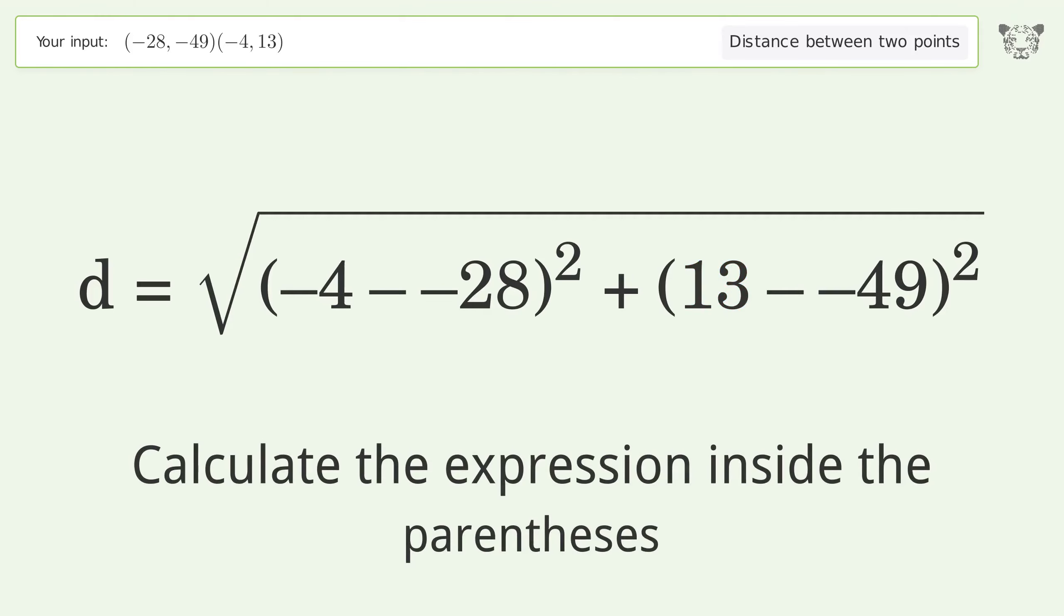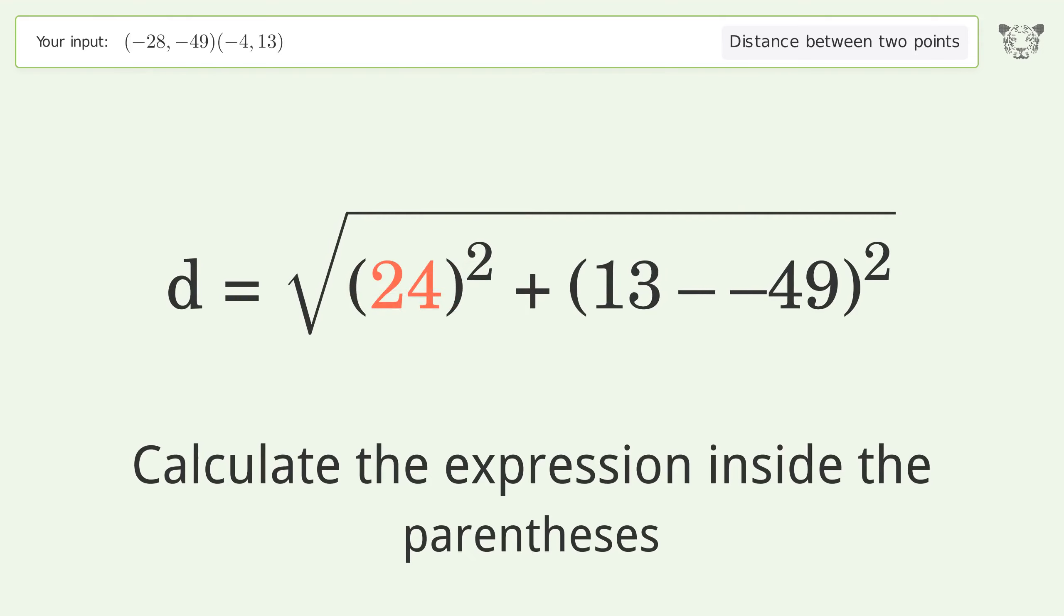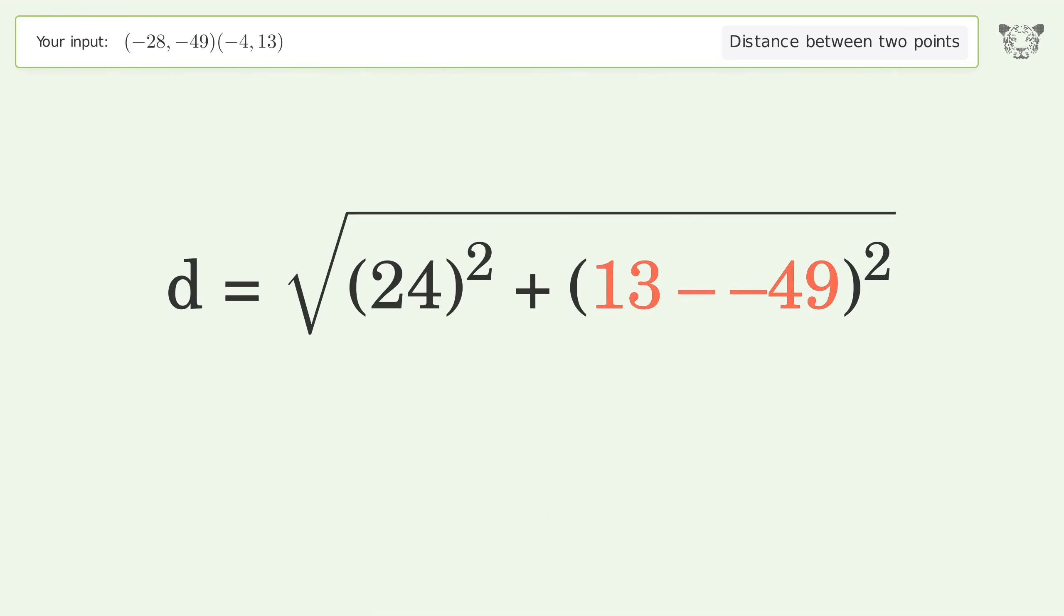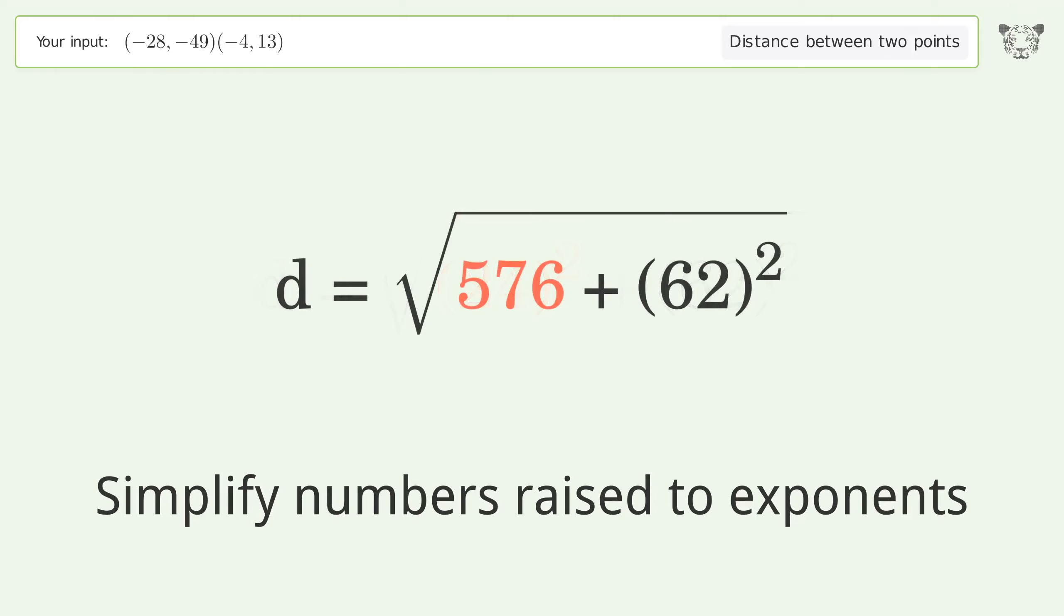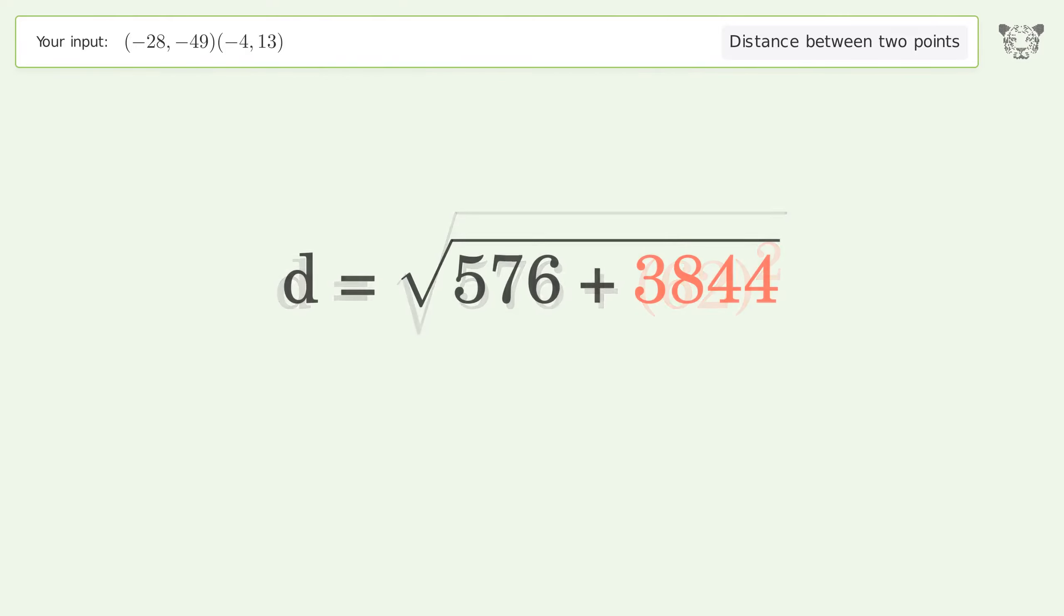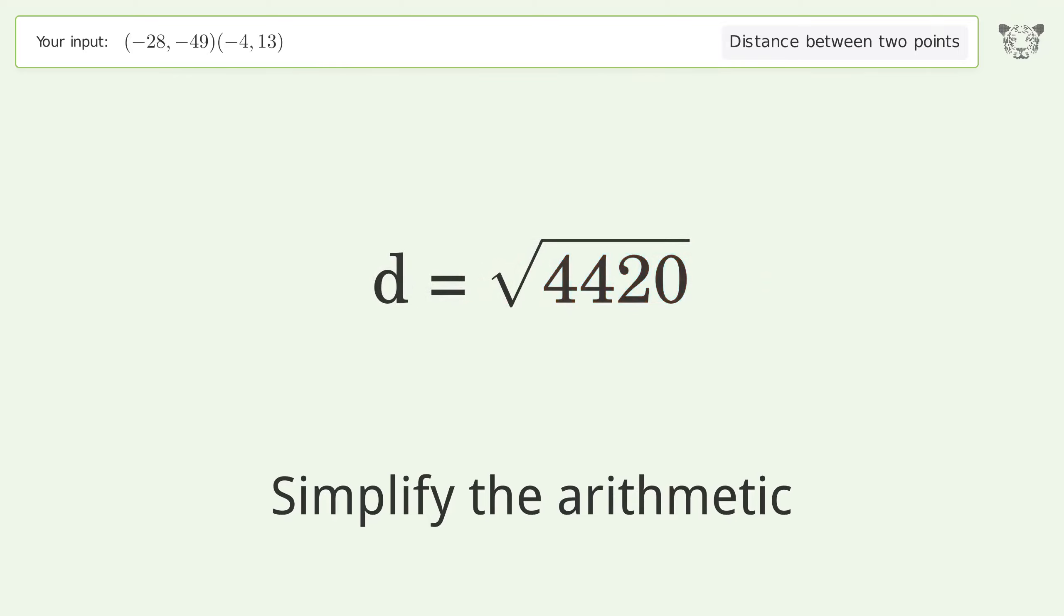Calculate the expression inside the parentheses. Simplify numbers raised to exponents. Simplify the arithmetic. And so the distance between the two points is the square root of 4420 or 66.483.